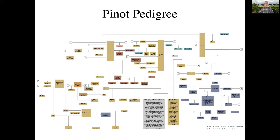Here's a map — I don't expect you to fully understand it, but it's a map of the Pinot pedigree as determined by geneticists using this technique. There are lots of different genotypes arising from this original parentage, giving us the diversity that we see. There are over 7,500 different grapevine genotypes today and it continues to grow.